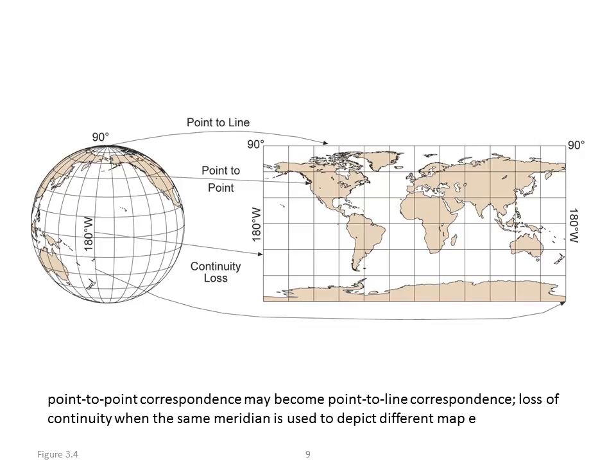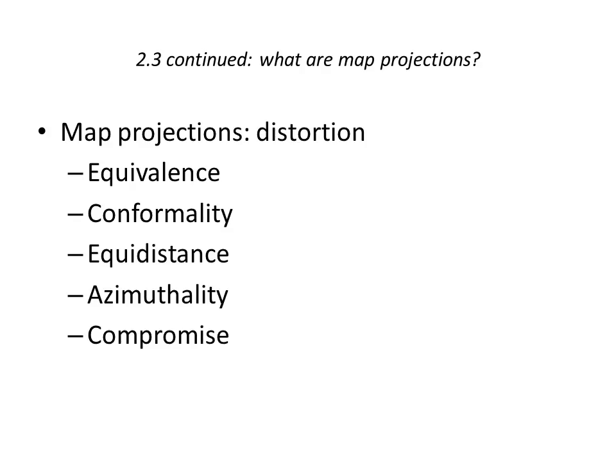That's a loss of point-to-point correspondence and a loss of continuity when you notice that 180 degrees west appears in two different parts of the map. In fact, they're the same line, yet they show up on different parts of the map.